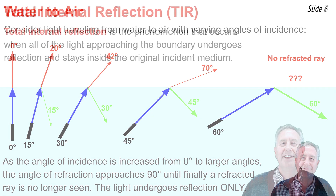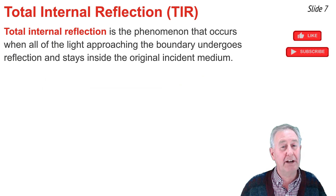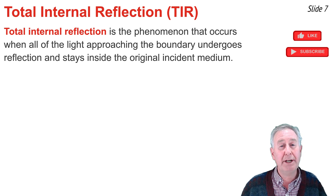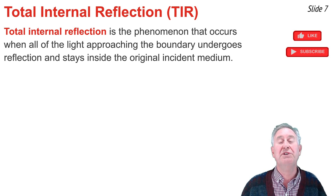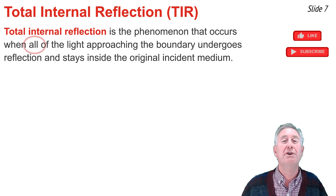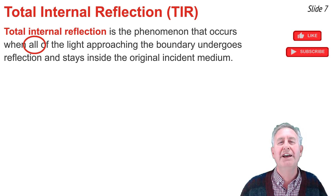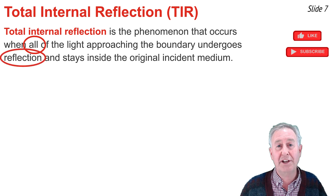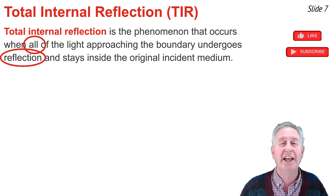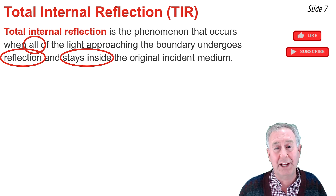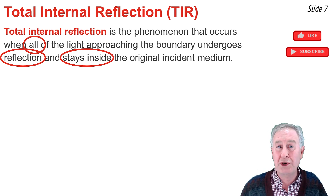This illustrates the phenomenon of total internal reflection, or TIR for short. Total internal reflection is the phenomenon that occurs when all of the light approaching the boundary undergoes reflection and stays inside the original material. The word 'all' means total — 100%. It's total reflection only: light doesn't both reflect and refract during TIR. And the term 'stays inside' means the light remains internal — inside the original material.